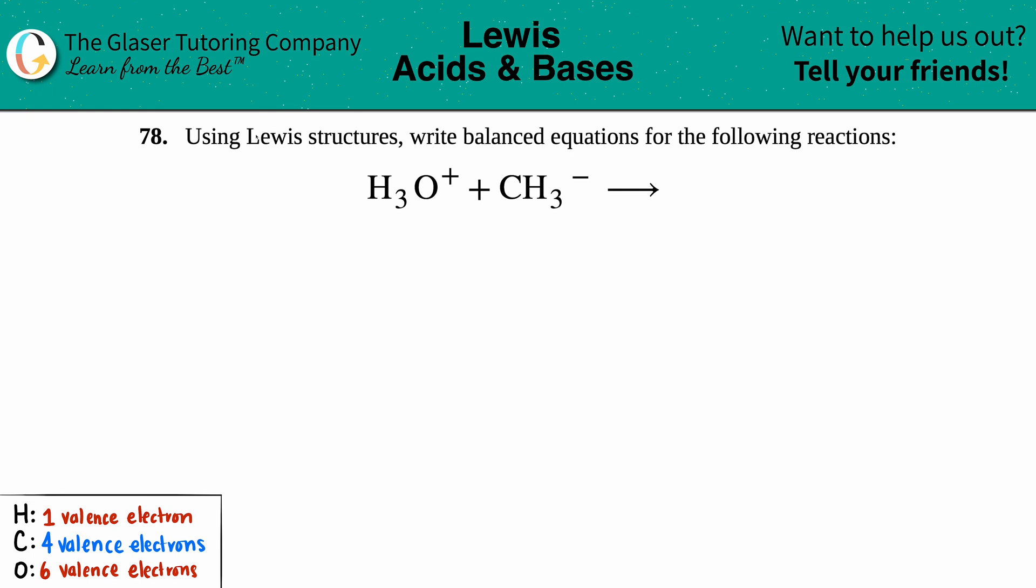Number 78: Using Lewis structures, write balanced equations for the following reactions. We have H₃O⁺ plus CH₃⁻, and we have to find out what the products are. We can get the products from using our Lewis structures, so we have to draw them.